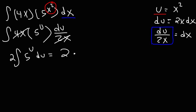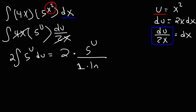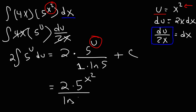The antiderivative of 5 to the u is 5 raised to the u divided by u prime. The derivative of u with respect to u is 1 — not 2x, because we're integrating with respect to u, not x. So it's 5 to the u divided by 1, times the natural log of 5, plus the constant of integration. Now replacing u back with x squared, the answer is 2 times 5 raised to the x squared, divided by ln 5, plus c.